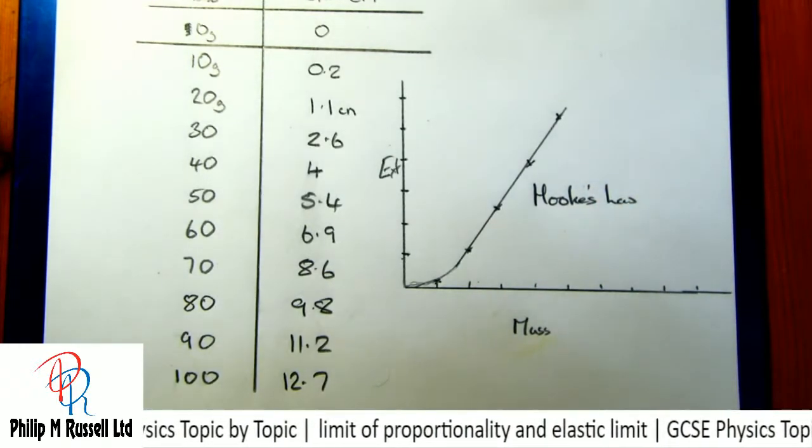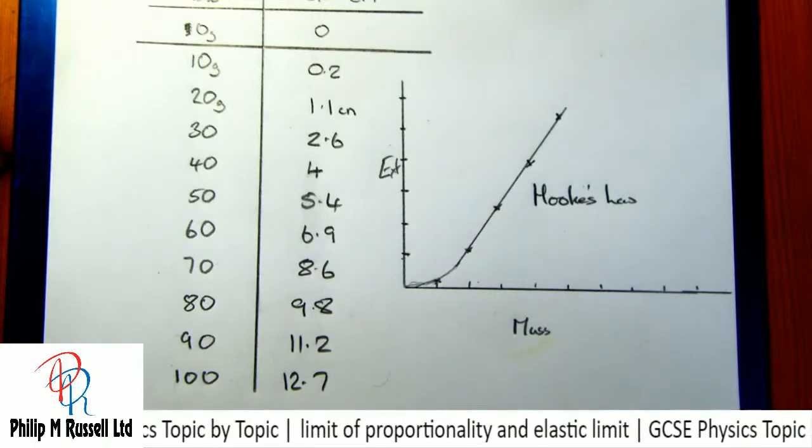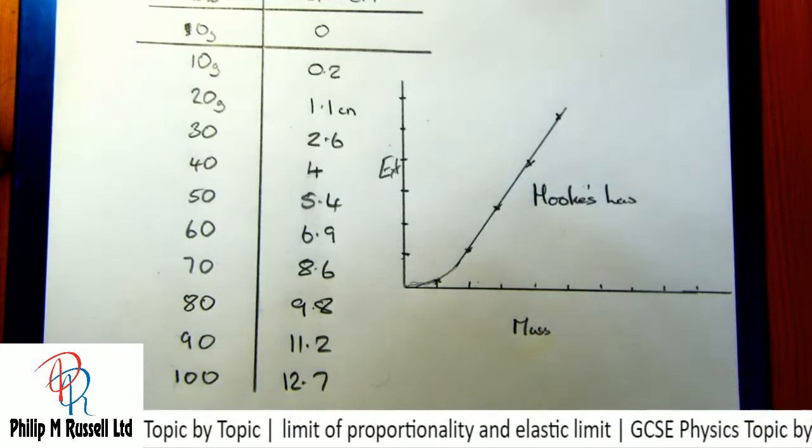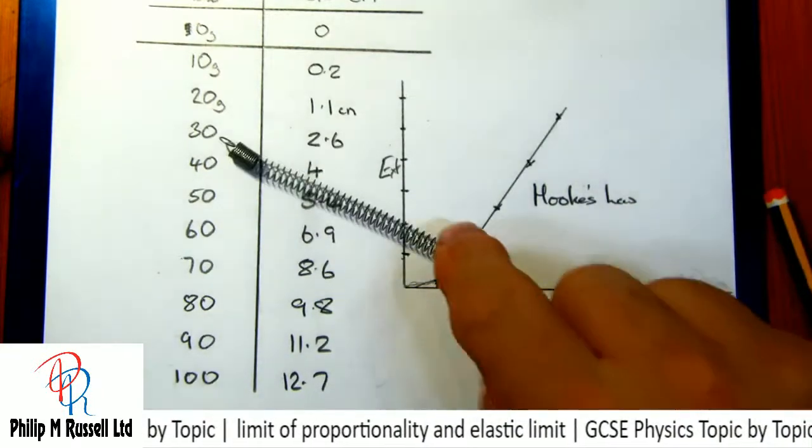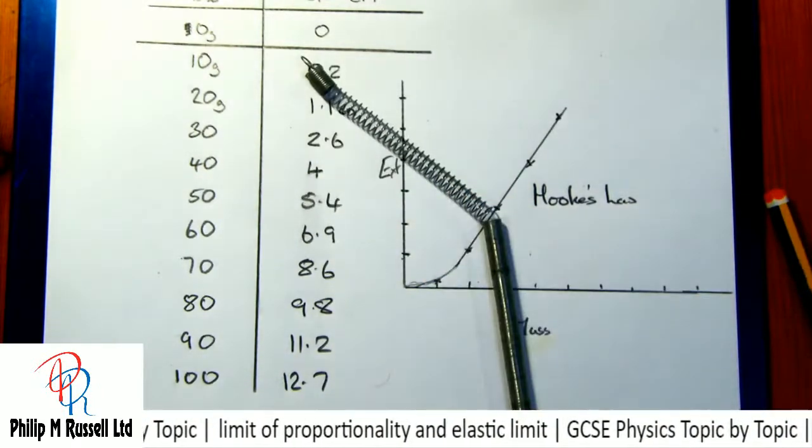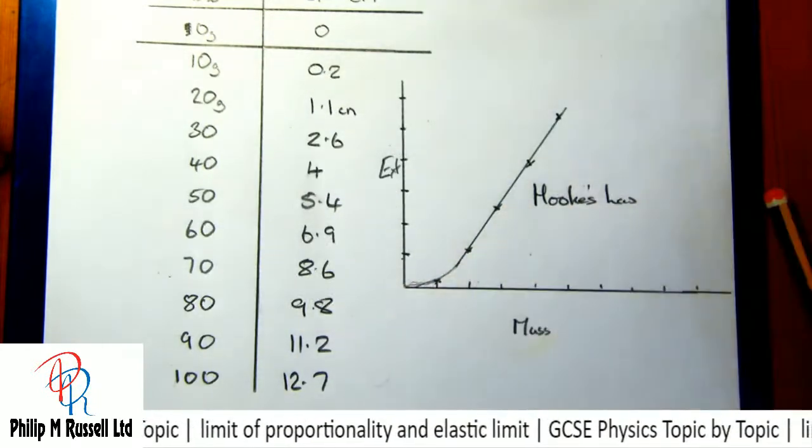So we can pull this spring out and it will go back exactly as it was. Here, this spring has been pulled out and now it won't go back. It's gone past its yield point, or I would say its limit of proportionality. That was a steel spring. And we can see that this follows Hooke's law. Hooke's law says that the extension of the spring is directly proportional to the force supplied, with the proviso as long as its limit of proportionality is not exceeded.